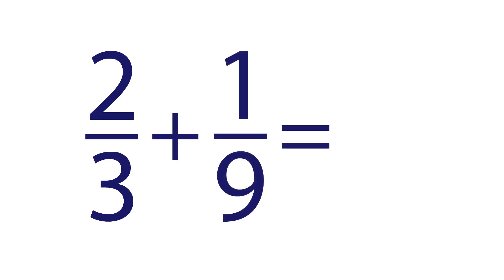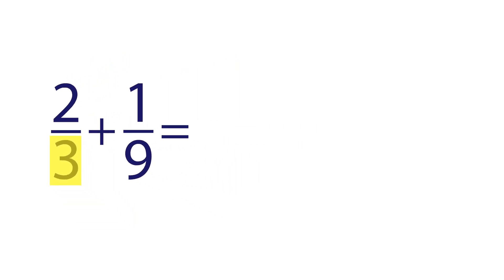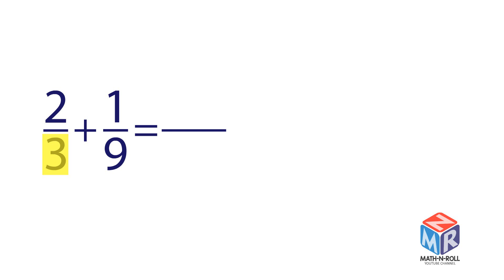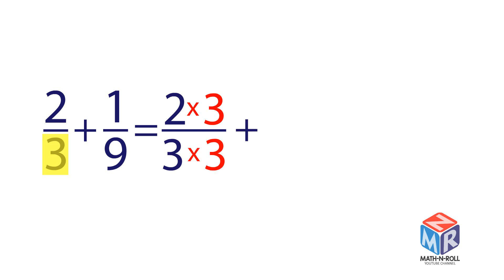Let's try another example. We need to add 2 fractions with unlike denominators: 2 thirds plus 1 ninth. First we need to convert these fractions into fractions with like denominators. We take the fraction with the smaller denominator and multiply both parts, the numerator and the denominator, by 3. Thus we found the equivalent fraction of 2 thirds. It is 6 ninths.